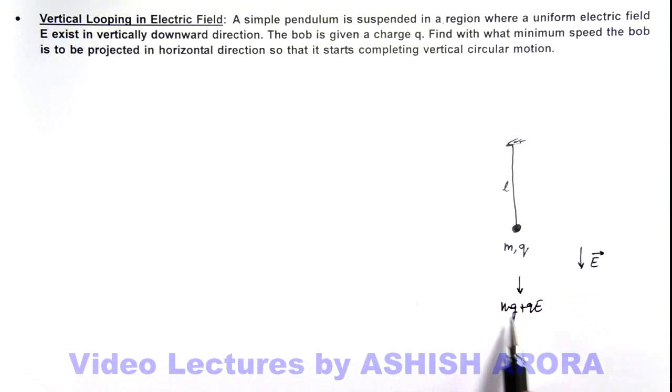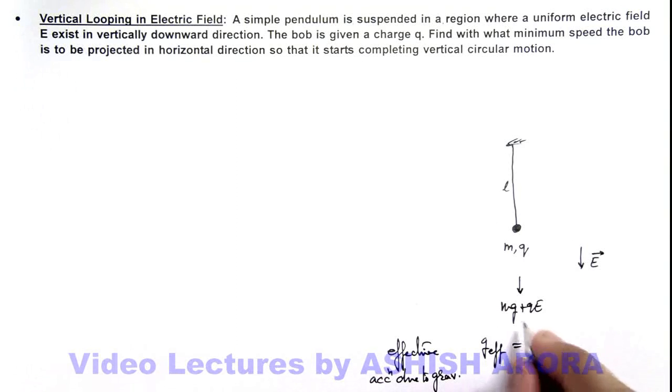So due to both of these forces we can find out the effective gravity acting on it or effective acceleration due to gravity. That we can calculate: g effective is equal to this total force by mass, which is g plus q E by m, where g is the acceleration due to gravity and q E by m is the additional acceleration due to electric field acting on the bob in downward direction.